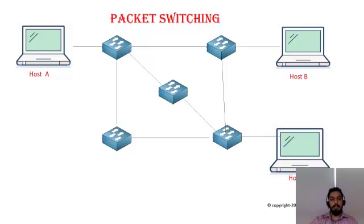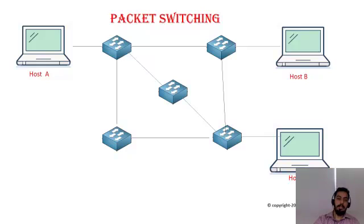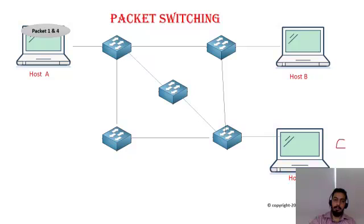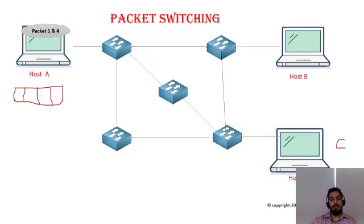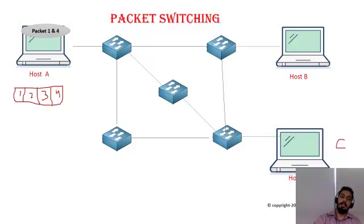In this demonstration, we have three computers — A, B, and C — connected in a topology with different switches in the network. Computer A has some data it wants to send to Computer C. That data is divided into four different chunks, referred to by sequence numbers one, two, three, and four, all of which need to be transferred to the destination.